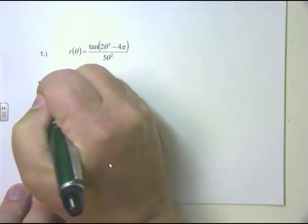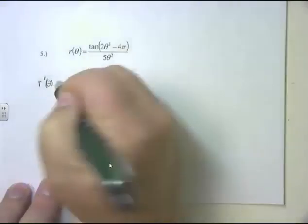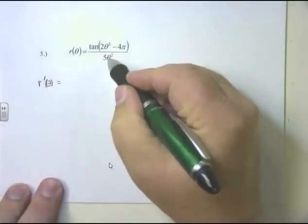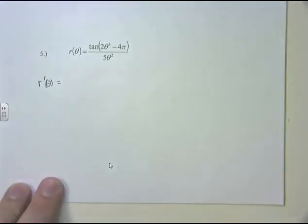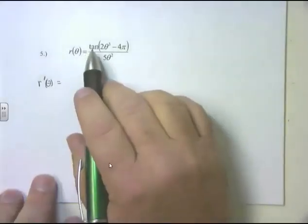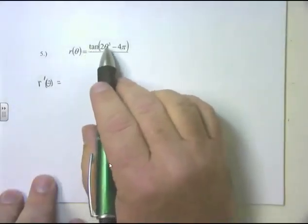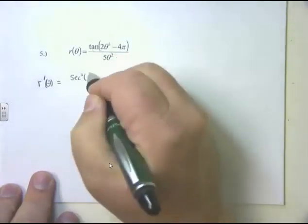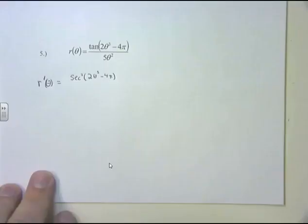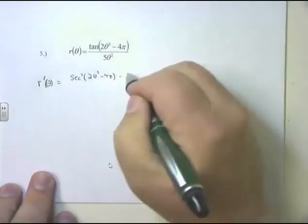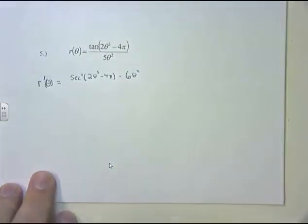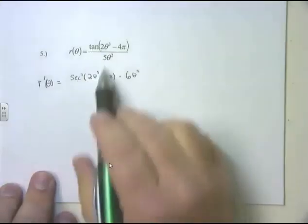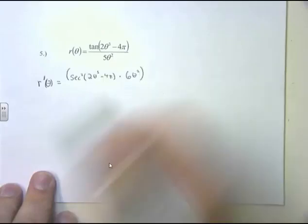r'(θ) = quotient rule. Let's look at the derivative of the top: tan(2θ³ - 4π). Tangent is on the outside; 2θ³ - 4π is the inside angle — chain rule. Derivative of tangent is secant squared. The inside, 2θ³ - 4π, stays the same. Times the derivative of the inside: derivative of 2θ³ is 6θ², and derivative of 4π is 0 (it's a constant). So the derivative of the top is secant²(2θ³ - 4π) times 6θ².